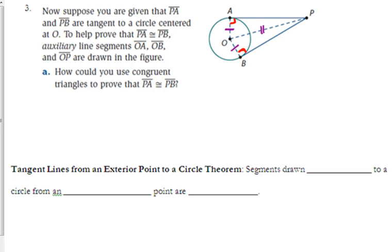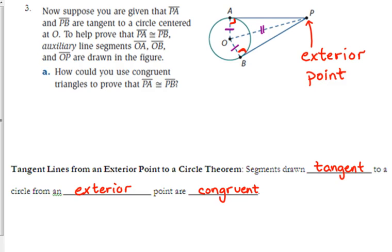Tangent lines from an exterior point. P is an exterior point. Exterior means outside. So it is outside the circle. P is a point outside the circle. So segments drawn tangent to a circle from an exterior point are congruent. If you know that those two segments coming from the same exterior point, if you know that they are tangent, then they are congruent to each other at the same measure.